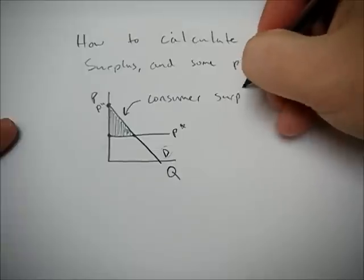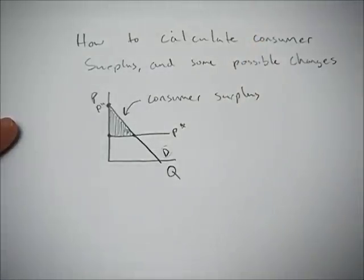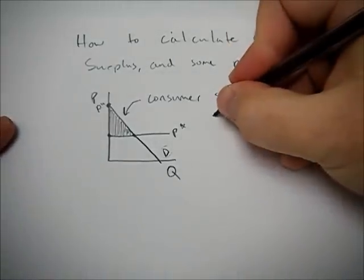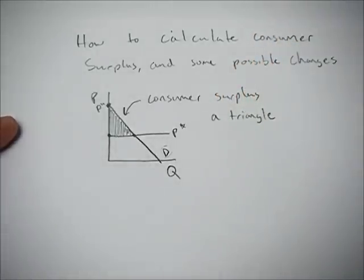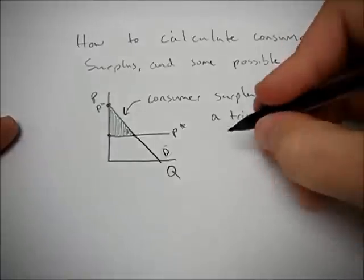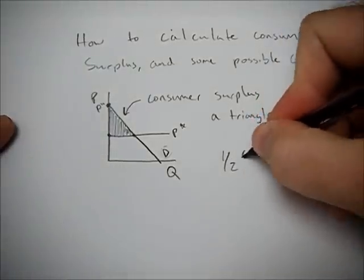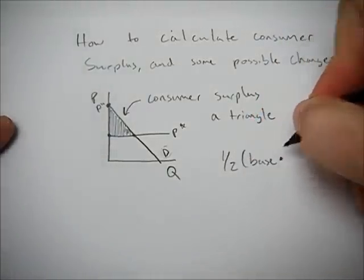And as you can see, as long as we have linear demand curves, consumer surplus is going to be a triangle. So you have to know how to calculate the area of a triangle. And if you don't, I'll tell you. It's half base times height.